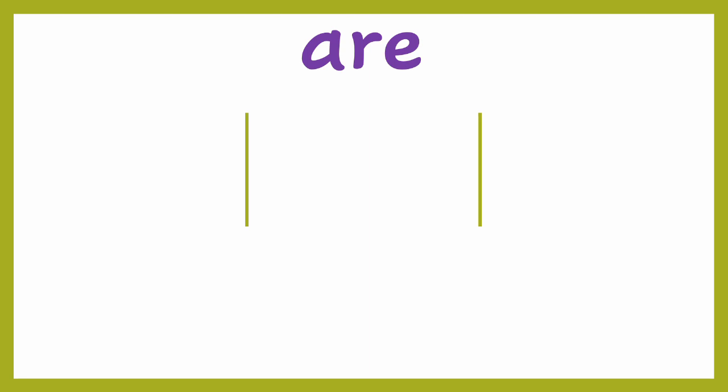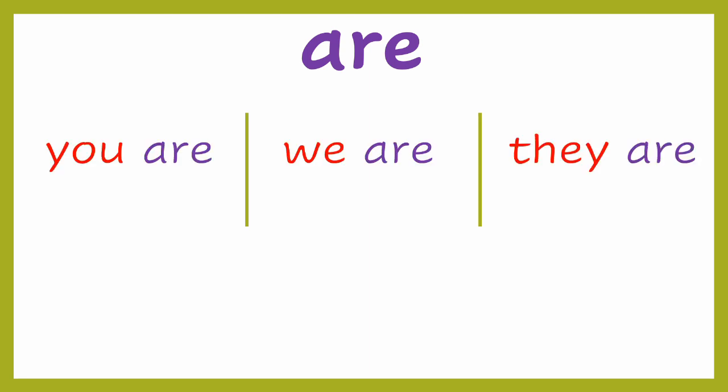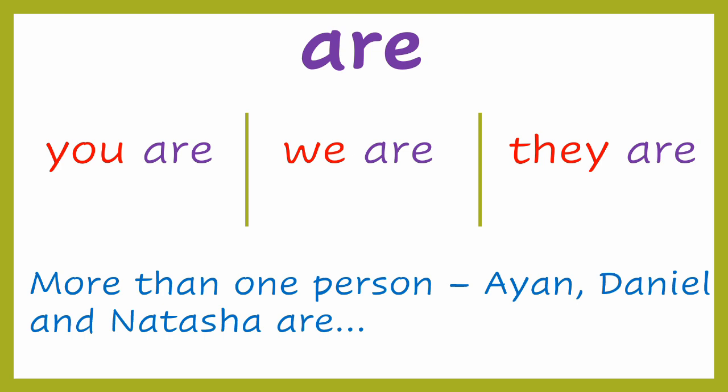Now let's look at ARE. We use ARE with you, we, and they — you are, we are, they are. We can also use ARE with names of more than one person. For example, Daniel and Natasha are colleagues, or Daniel and Natasha are throwing a party next week.